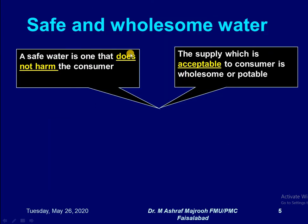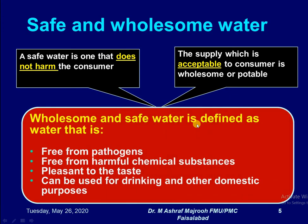What is safe and wholesome water? A safe water is one that does not harm the consumer. The supply which is acceptable to the consumer is defined as wholesome or potable water. Both qualities must be present. Wholesome and safe water is defined as water that is free from pathogens, free from harmful chemical substances, pleasant to taste, and can be used for drinking and other domestic purposes.